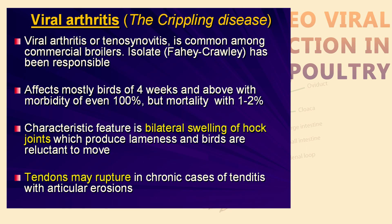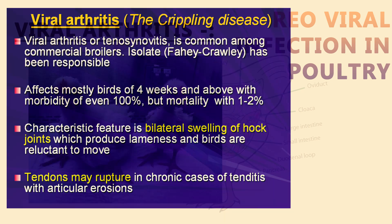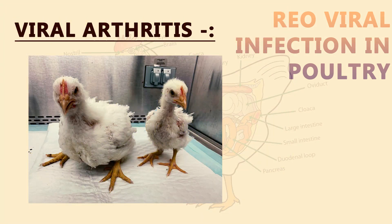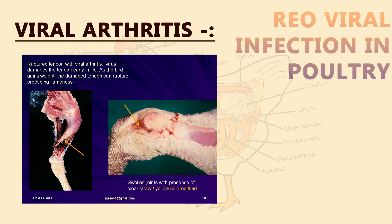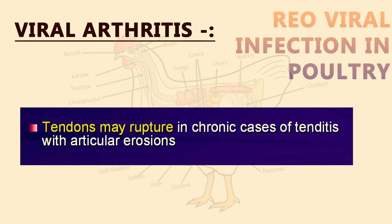Because of the lameness, affected birds are unable to eat properly and may die, accounting for 1-2% mortality. Post-mortem lesions particularly show joint swelling. Inside the swollen joints, there will be straw-colored or yellow-colored clear fluid. Sometimes there will be rupture of the gastrocnemius tendon of the joints, which causes the lameness.